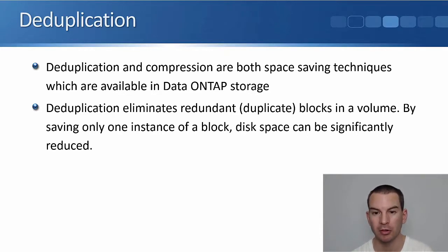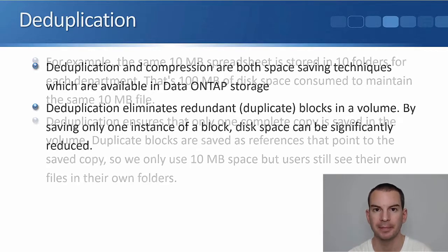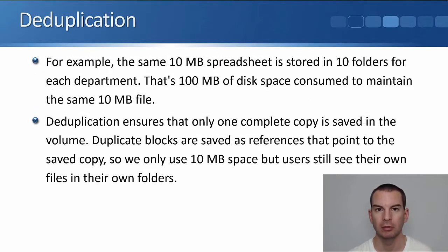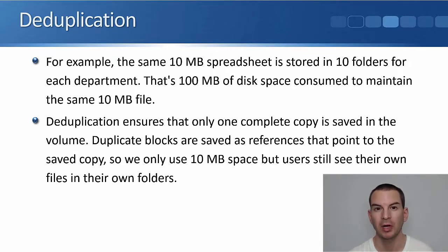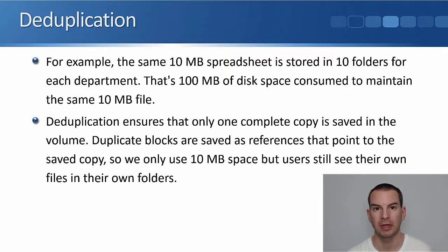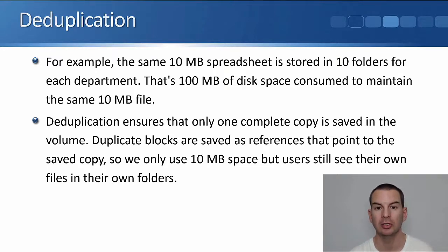Disk space can be significantly reduced. For example, let's say we've got a company that's got 10 departments and each department has its own folder in a volume. We've got a 10 megabyte spreadsheet file and each department has a copy of that in their own folder. That's 10 copies in 10 different folders of a 10 megabyte file — 100 megabytes without deduplication. But if we turn on deduplication, only one copy is saved in the volume; duplicate blocks are saved as references, just as pointers to the saved copy.